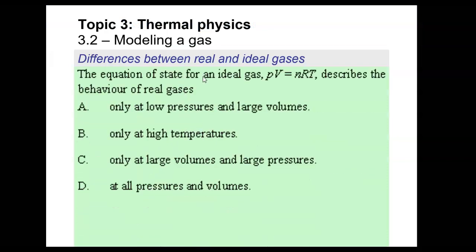Now let's go to the next question. It says the equation of state for an ideal gas, PV = nRT, describes the behavior of real gases. We have a multiple choice question asking under what conditions does this ideal gas equation work. Pause it here and see if you can answer this question.